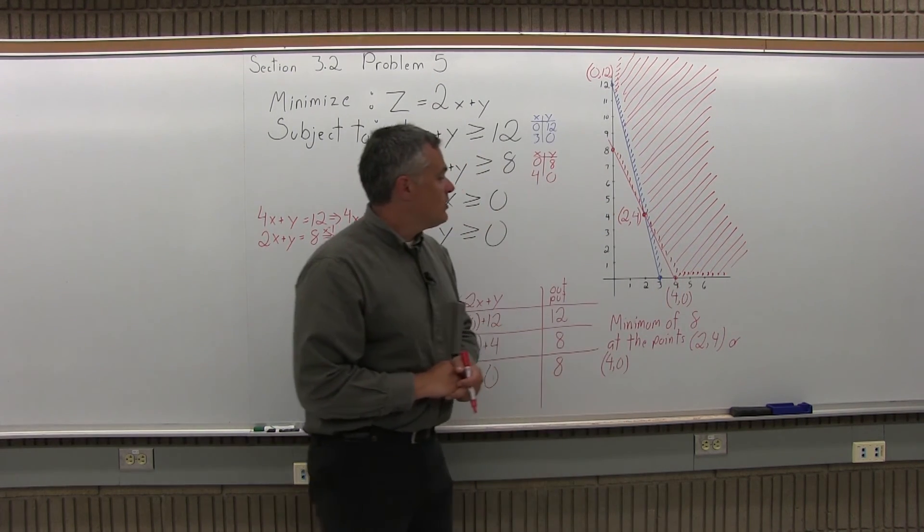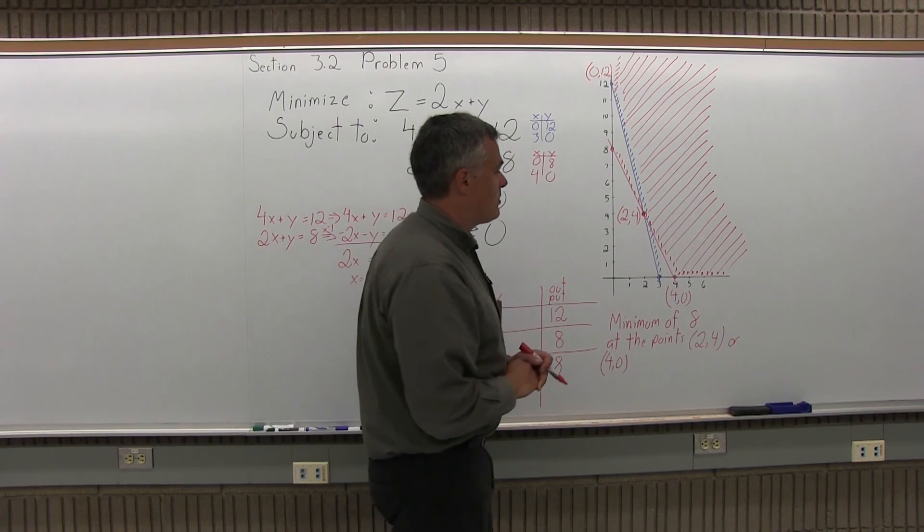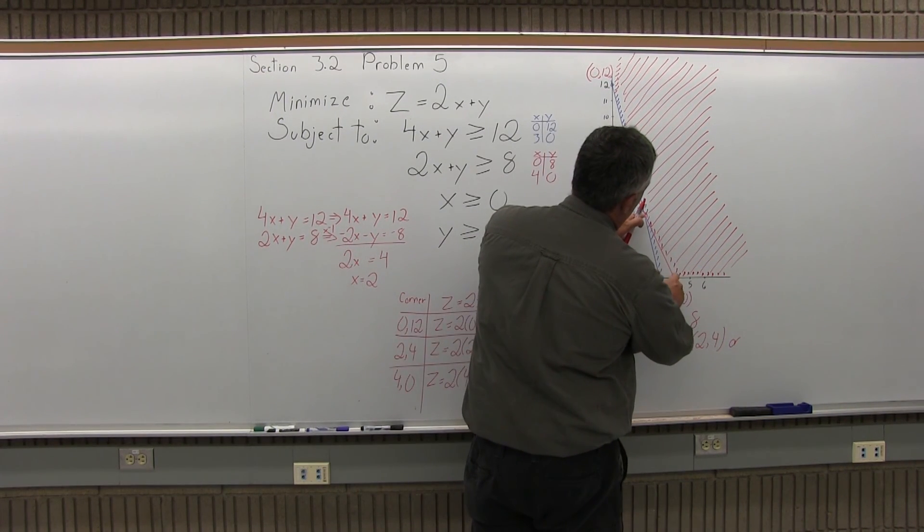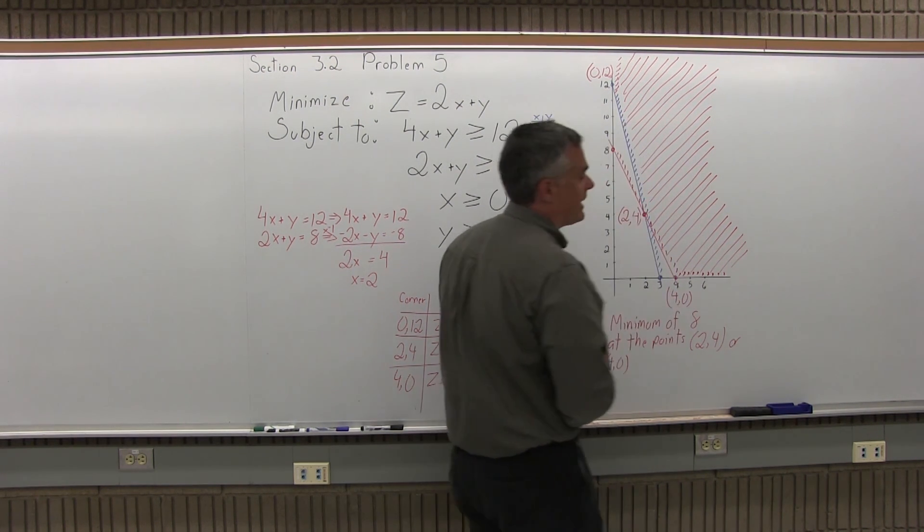Now in reality not only those two corner points will produce that minimum output of 8, but every one of the points on the line that connects 4, 0 and 2, 4 would also give you that minimum of 8.